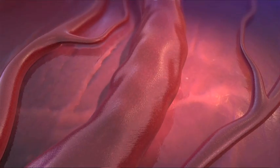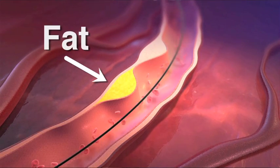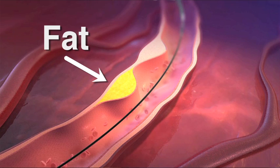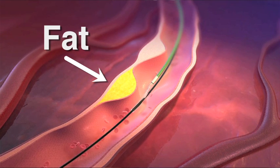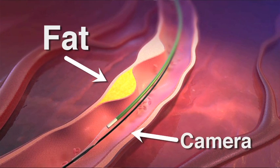We are presently using a brand new and very innovative device called the Lipiscan system. The Lipiscan system is a device which is placed in the patient's coronary arteries during an ordinary cardiac catheterization to help us identify those patients who have a high content of fat or what we call lipid in the coronary arteries.